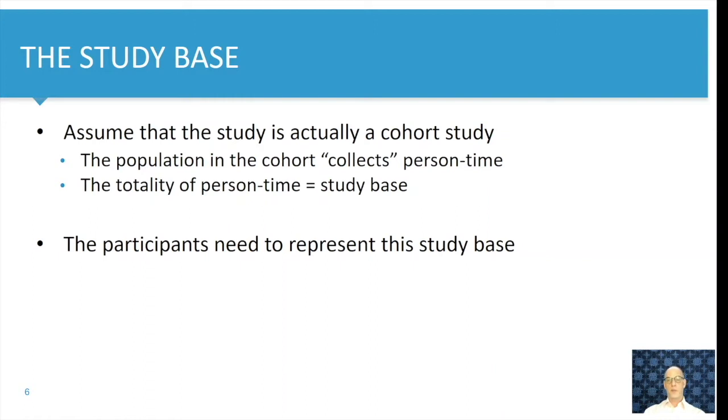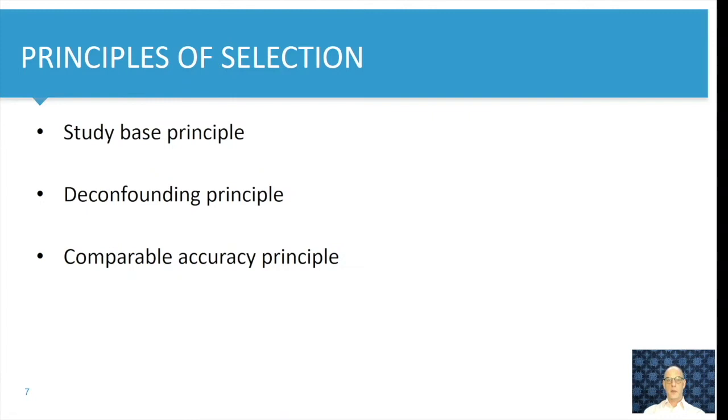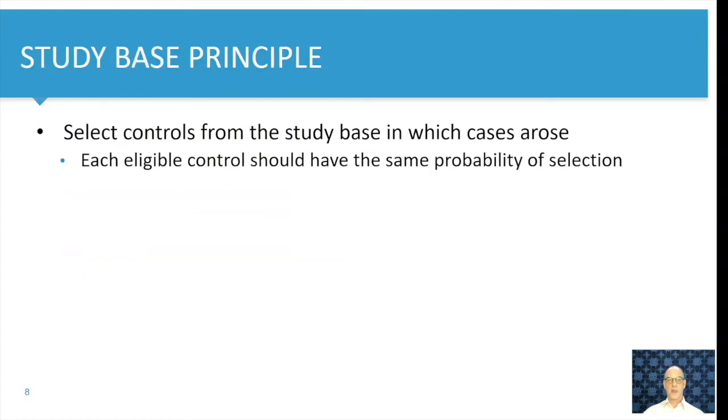The core principle of a case control study is that the participants, whether they are cases or controls, should be part of that study base. Selecting participants for a case control study is done on three principles. We have the study base principle, the deconfounding principle and the comparable accuracy principle. So let us start with the study base principle.